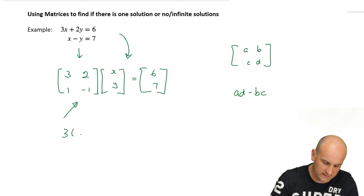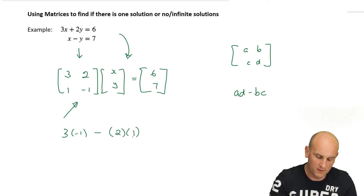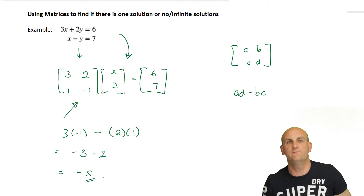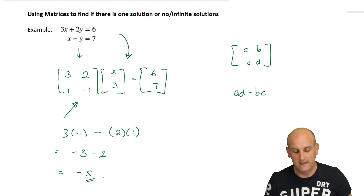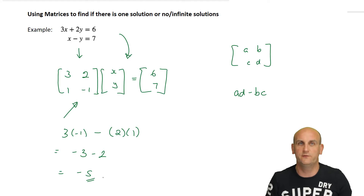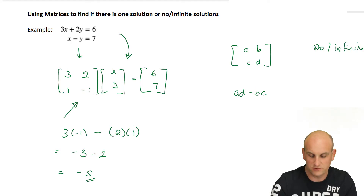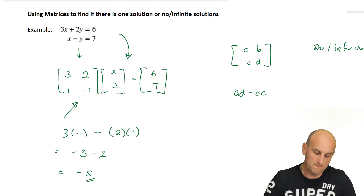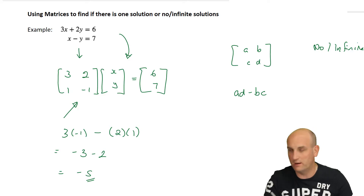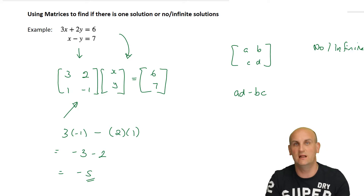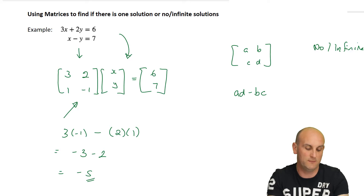That does not mean there are minus five solutions. What I'm looking for is the determinant to be either zero or not zero. If the determinant is zero, that means there are no solutions or there are infinite solutions. Because this determinant is non-zero (negative five), I can state categorically this will have one solution. Interestingly, the question may not ask you to find that solution — it literally asks you to determine whether there's one solution or no solution.